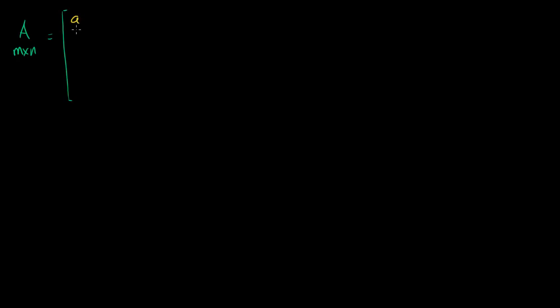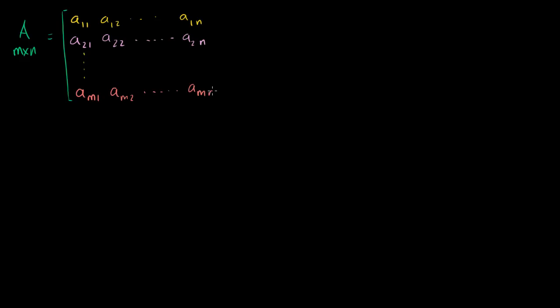I've got a matrix A, and it's an m by n matrix — it has m rows and n columns. We can write it in fairly general terms: the first row would be a_{1,1}, a_{1,2}, all the way to a_{1,n}. The second row would be a_{2,1}, a_{2,2}, all the way to a_{2,n}. We keep going all the way down to the mth row: a_{m,1}, a_{m,2}, all the way to a_{m,n}. That is our matrix A.